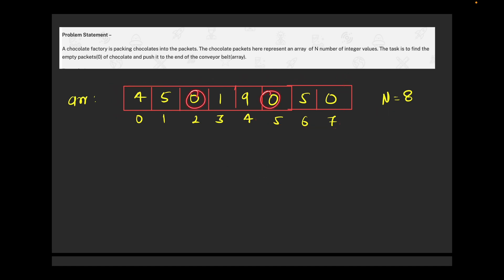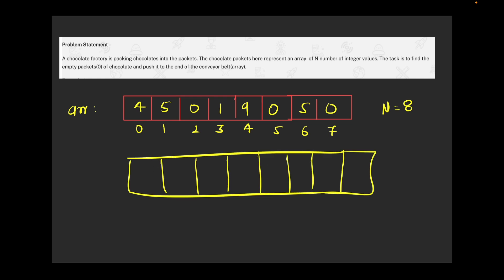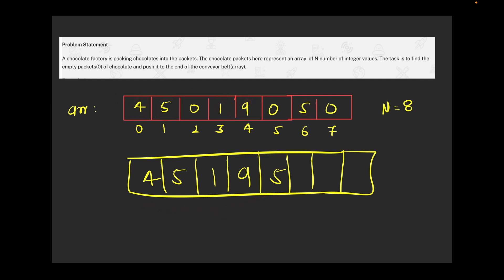The task is simply to push all zeros to the end of the array. For example, I'll create an array of size 8. I bring all the non-zero numbers to the start of the array — 4, 5, 1, 9, 5 — while maintaining their original order: 4 came first so it stays first, then 5, then 1, 9, and 5. The remaining spaces are filled with zeros. So the question is easy; it was just presented in story format.